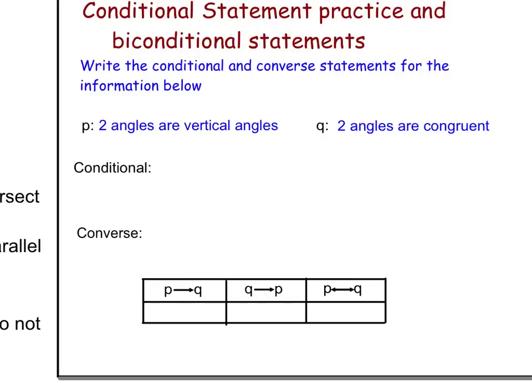So now we have another set of statements. P, two angles are vertical angles, and Q, two angles are congruent. Pause the video and you write the conditional statement before you see how I have written it. Practice writing conditional statements. Pause the video.